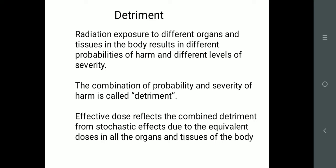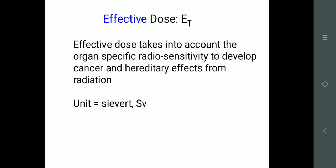Detriments means probability of chances — whether X-rays interacting with your body are harmful or not. That information is given by detriments. Detriments is radiation exposure of different organs and tissues resulting in probability of harmful effects. It gives you information about tissue and radiation interaction, whether it is harmful or less harmful. It is the combination of probability and chances of occurrence of radiation effects.